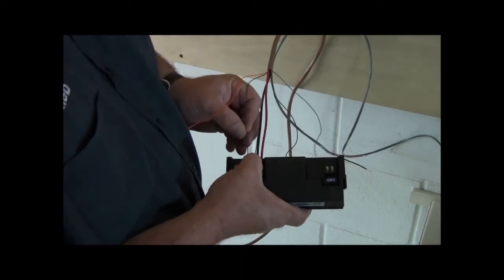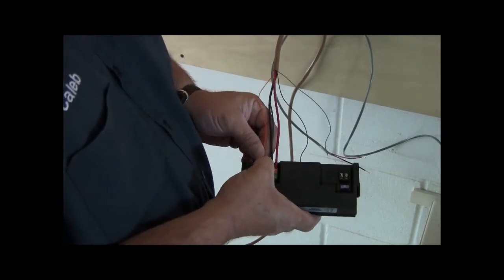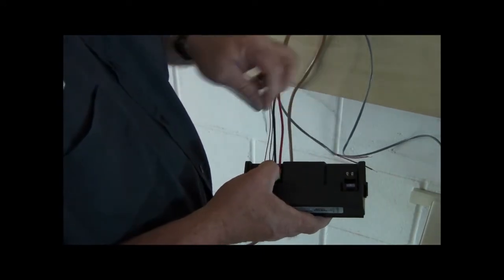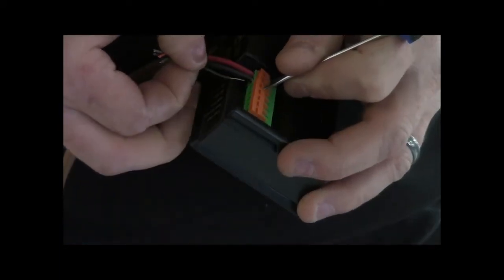Pull back the orange tab on each of the spring cage connections fully and push the wire in the opening. Release the orange tab and pull back slightly on each wire to seat the grip as you move across the connector. The spring cage tab can be pulled back with a fingernail or small screwdriver.